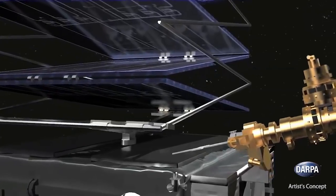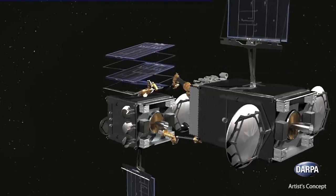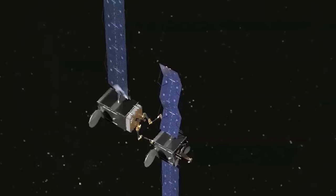When the RSGS servicer arrives there in the early 2020s, it will be able to move satellites to new orbits, fix stuck solar panels, and perform other important chores.